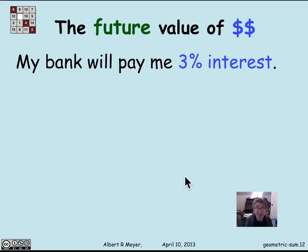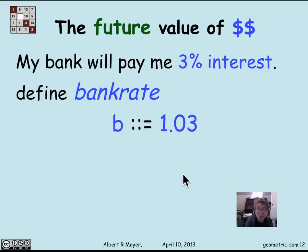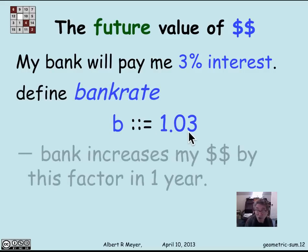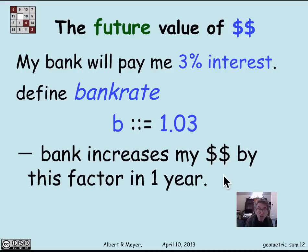Here's the basic fact for evaluating the value of money in the future: I'll assume that my bank will pay me 3% interest. This is a generous bank in today's economy, but it used to be a stingy offer — interest rates in my lifetime have ranged between about 17% a year down to less than 1% a year. Let's define the bank rate B to be 1.03. The deal is that the bank will increase the money I deposit now by a factor of B in one year.